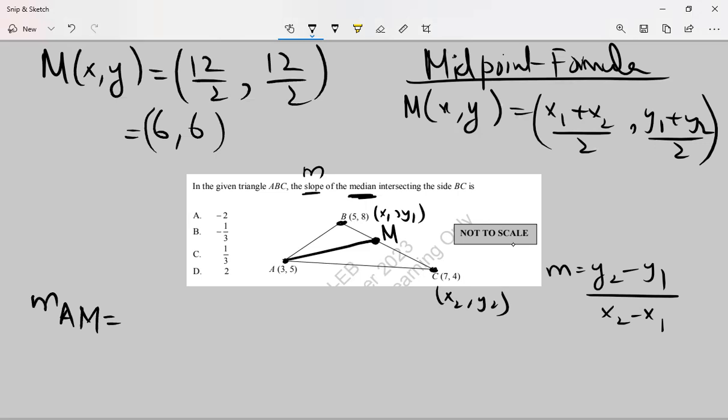Y2 minus y1 means it's the point 6 comma 6. You can easily find out 6 minus 5, y2 minus y1 upon x2 minus x1, 6 minus 3.